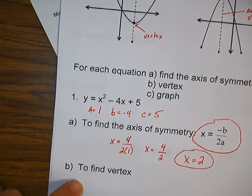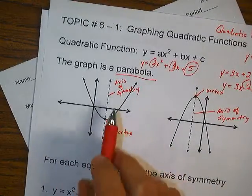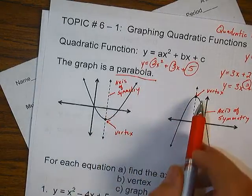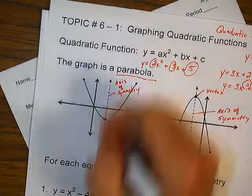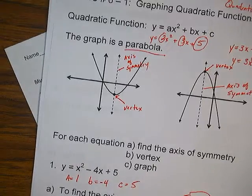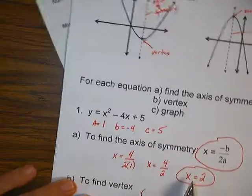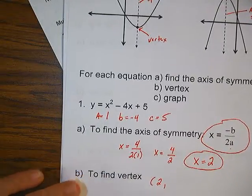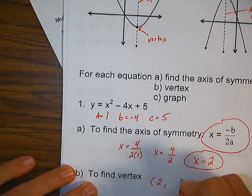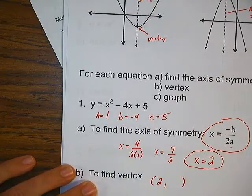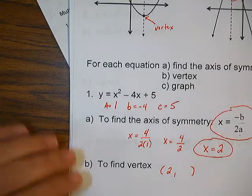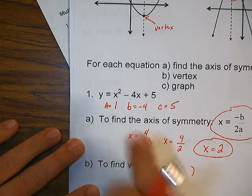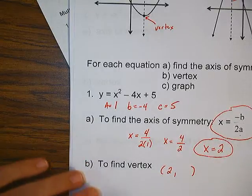Now it says find the vertex. If you notice in these pictures, the vertex is on the axis of symmetry. That means the x value of the vertex has to be 2. We know the x value, but I want a point, so now I have to find my y. Just like when we did substitution — we have an x and we want to find y — all I'm going to do is plug my x in and solve for y.